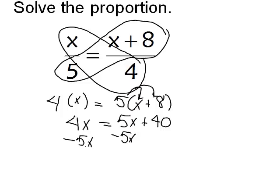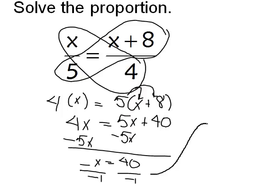Remember, I want to get the x's on the same side. So I end up with negative x equals 40. But I don't want to know what negative x is. I want to know what positive x is. So I'm going to divide by negative 1. And it turns out that my answer is x equals negative 40.